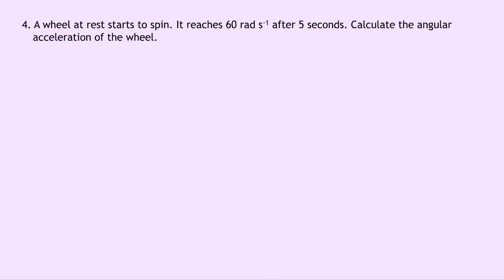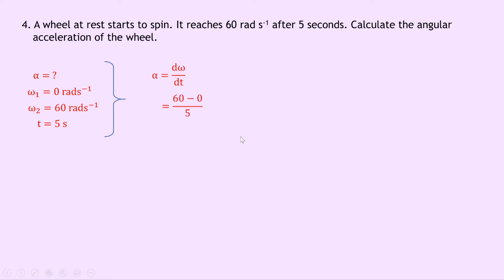Question four says that a wheel at rest starts to spin and reaches 60 radians per second after 5 seconds. Calculate the angular acceleration of the wheel. The initial angular velocity omega 1 is 0 radians per second, the final angular velocity omega 2 is 60 radians per second, and the time is 5 seconds. Using alpha equals d omega by dt — the rate of change of angular velocity — we get 60 minus 0 divided by 5, which gives an answer of 12 radians per second squared.